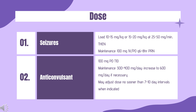Tablet: 100 mg PO TID initially. Maintenance: 300–400 mg/day, increase to 600 mg per day if necessary. Dose may be adjusted no sooner than 7–10 day intervals when indicated.